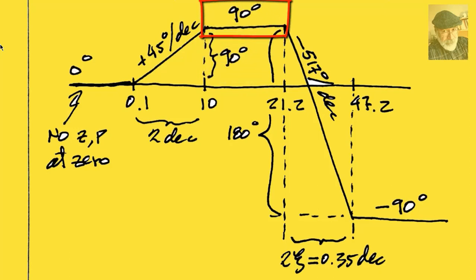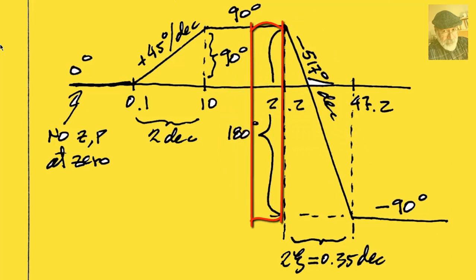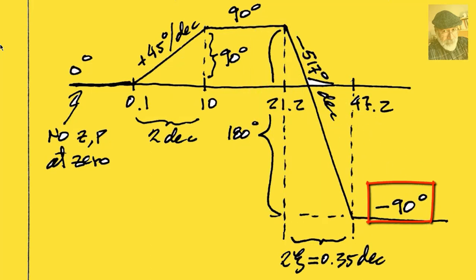So the value up here at this plateau is 90 degrees. The steep dive lasts for 0.35 decades, that is two times zeta. At a rate of 517 degrees per decade, the drop is 180 degrees, so the exit value is negative 90 degrees.